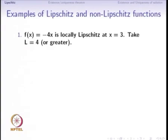Some examples of Lipschitz functions: f(x) = -4x is locally Lipschitz at x = 3. We will later see that it is locally Lipschitz everywhere — in fact, it is globally Lipschitz. This is what we will see very soon, but we had just begun drawing a graph.